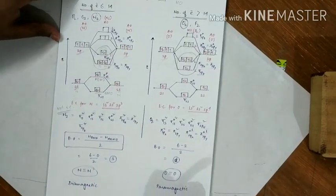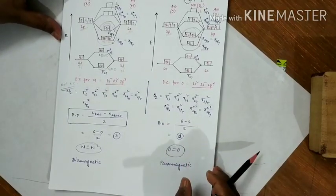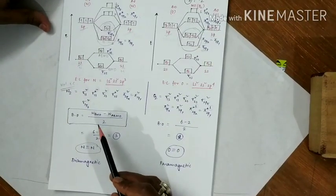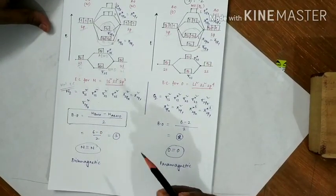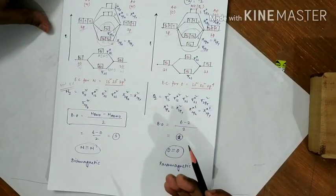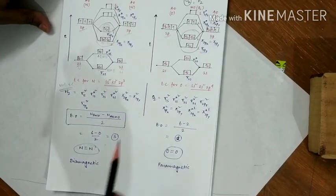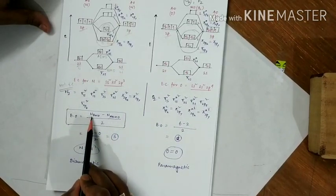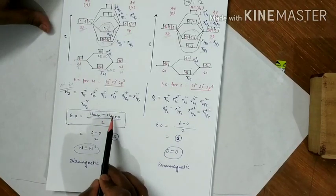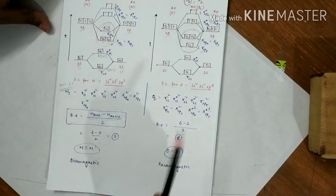From the molecular orbital diagram, we can find the bond order. Bond order is defined as the number of electrons in bonding molecular orbitals minus the number of electrons in anti-bonding molecular orbitals, divided by 2. This tells us whether a single, double, or triple bond is present in the molecule.